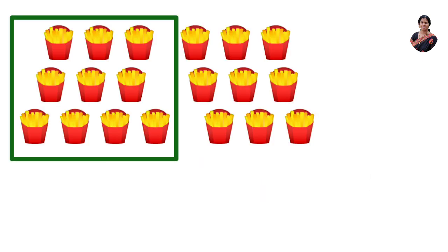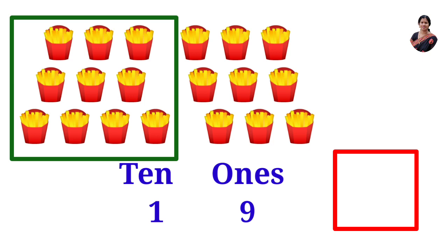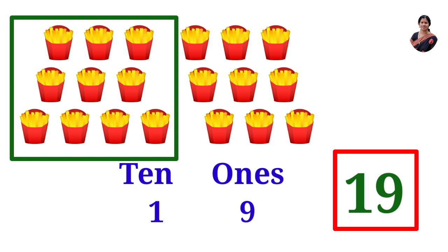And here are french fries. In a box, ten french fries, and how many ones? One, two, three, four, five, six, seven, eight, nine. That is one ten and nine ones. What will be the number? The number is one nine — nineteen.